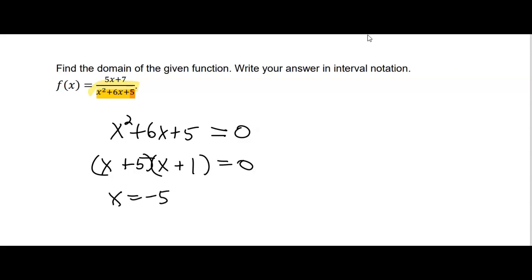So we get x equals negative 5 and negative 1. The interval notation, negative 5 and negative 1, we don't want negative 5 and we don't want negative 1. Those are the two values that divide by zero. But we want everything else, so we actually have three intervals that make up the domain.